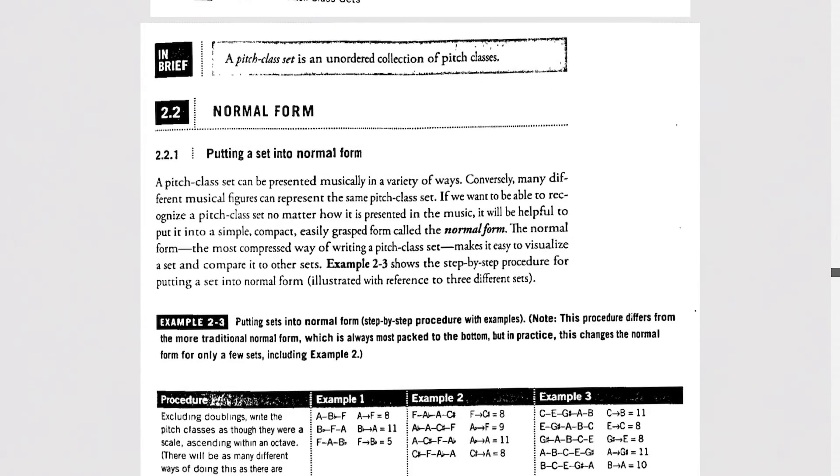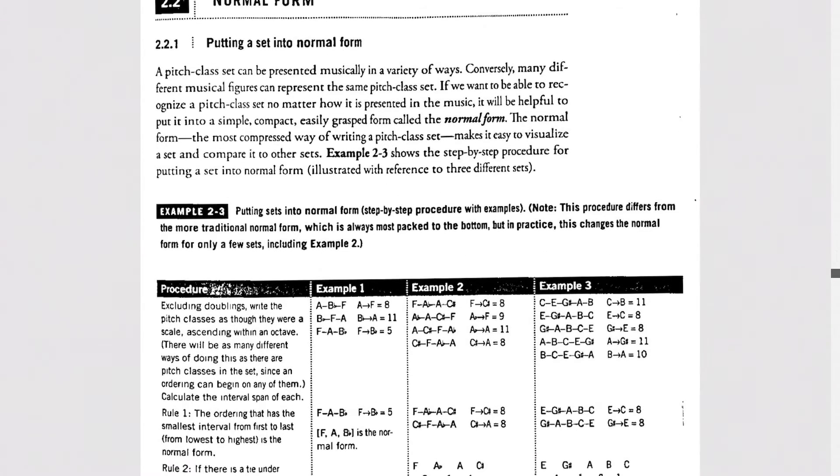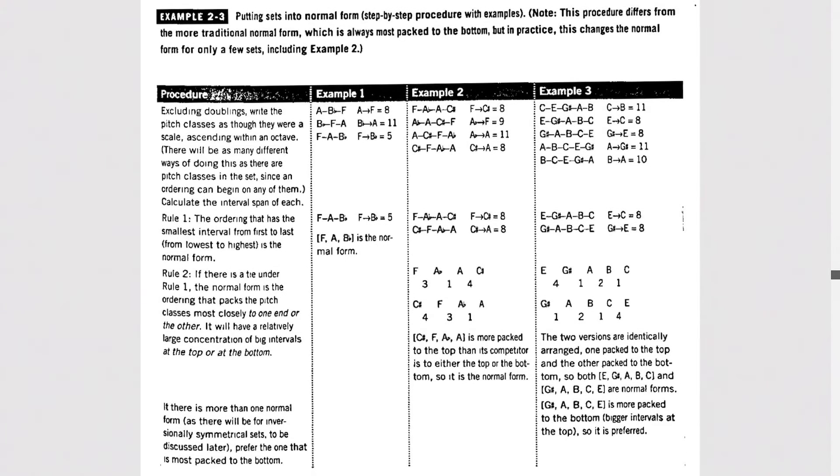So let's talk about normal form. Normal form is an arbitrary ordering of the set that puts the set into its most compressed form. A simple, compact, easily grasped form. So Strauss's example 2-3 really tells you everything you need to know about finding normal form. So if you ever get confused, go back to this page, page 45, example 2-3.